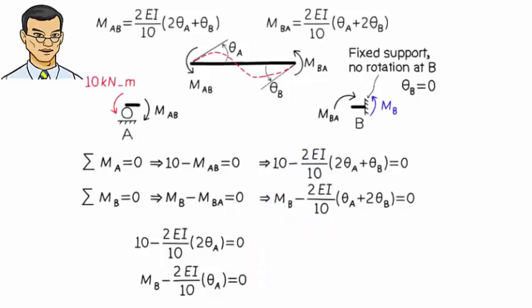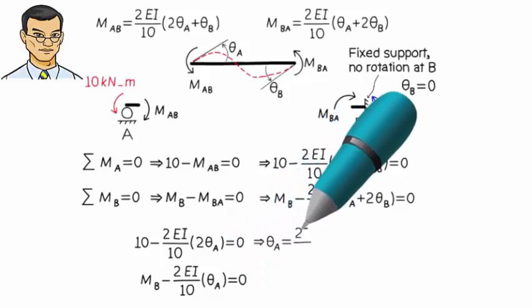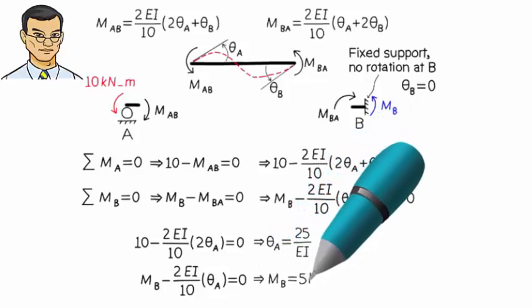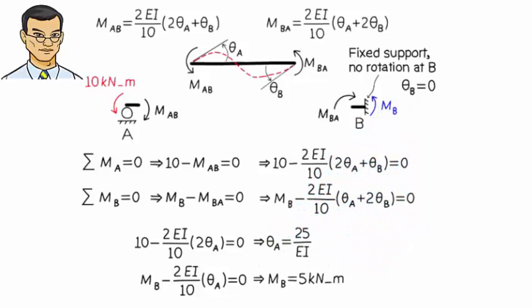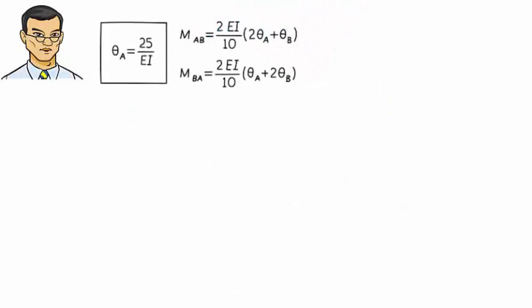Solving these for the unknowns, we get the values. Substituting 25 over EI for theta A and zero for theta B in the slope deflection equations, we get the member end moments.